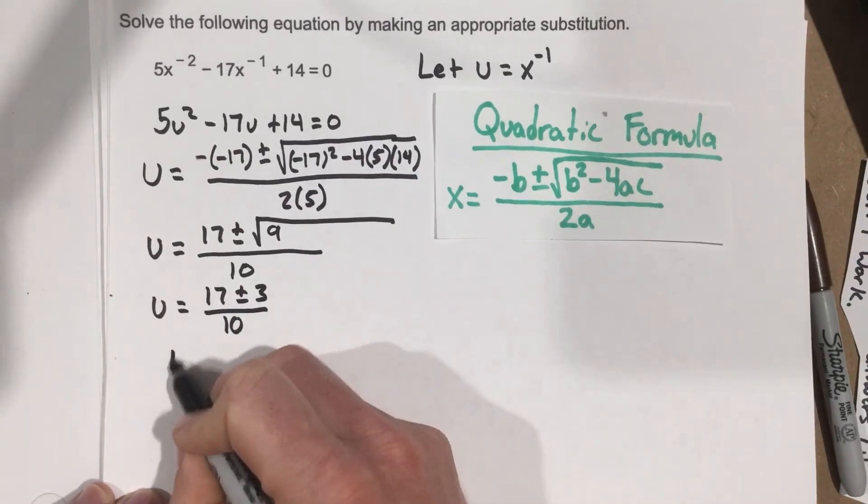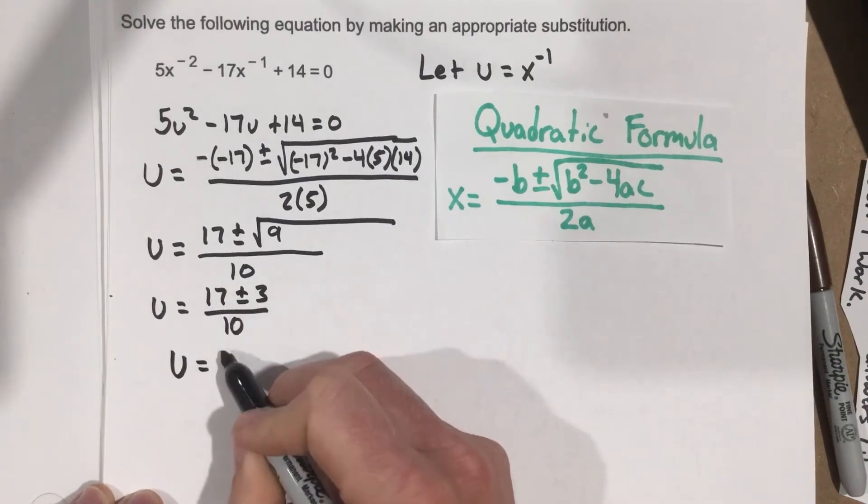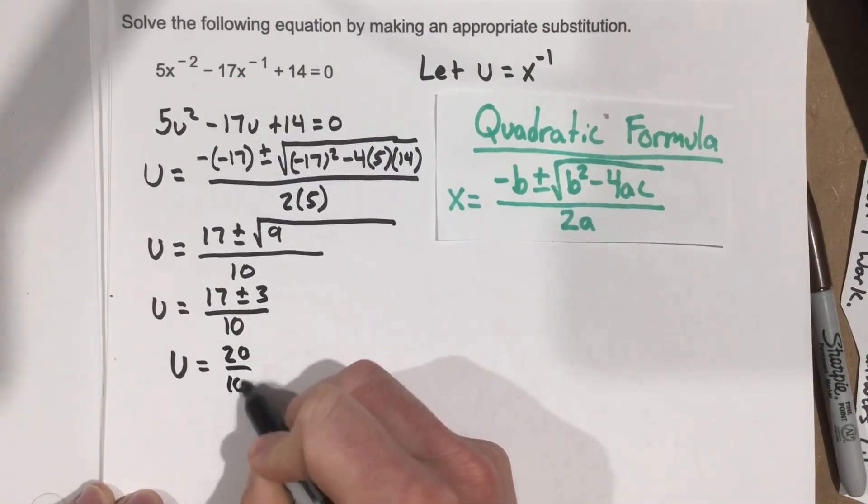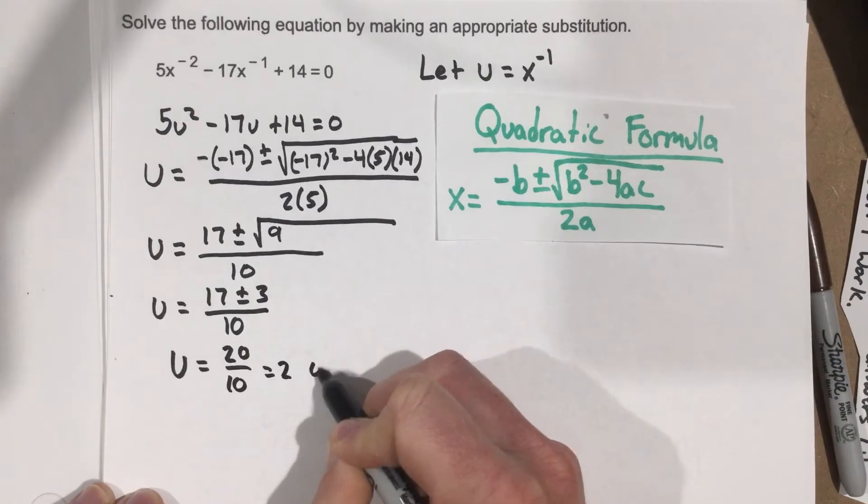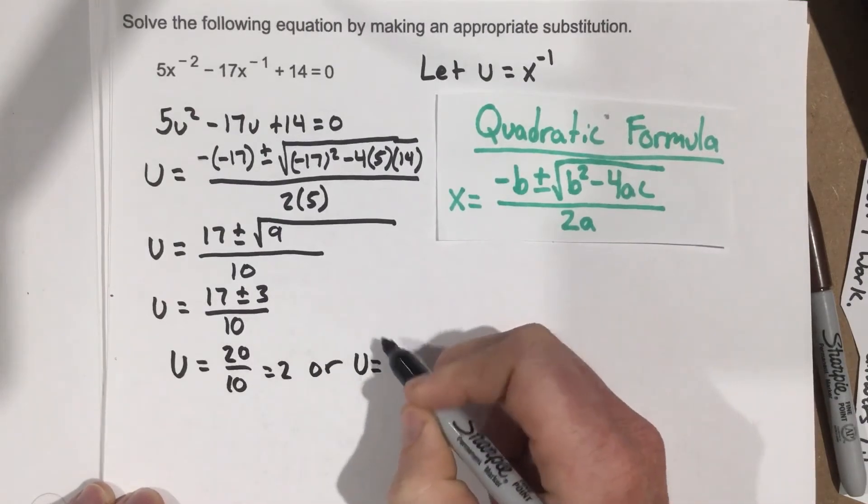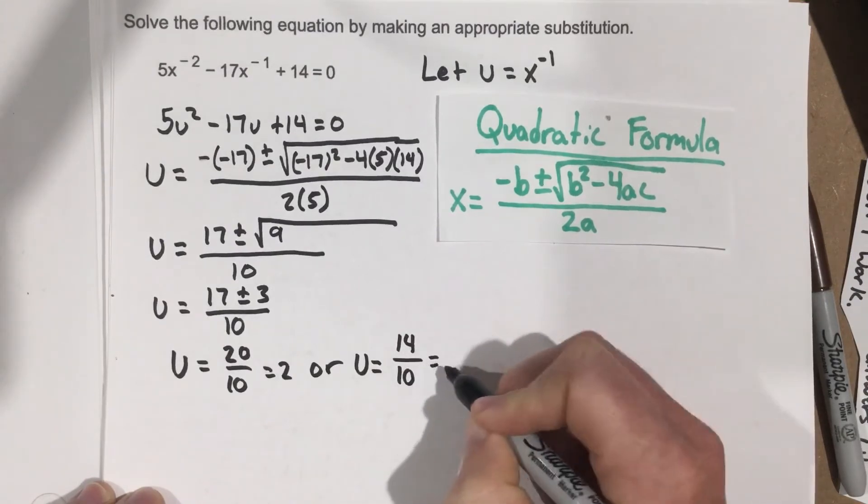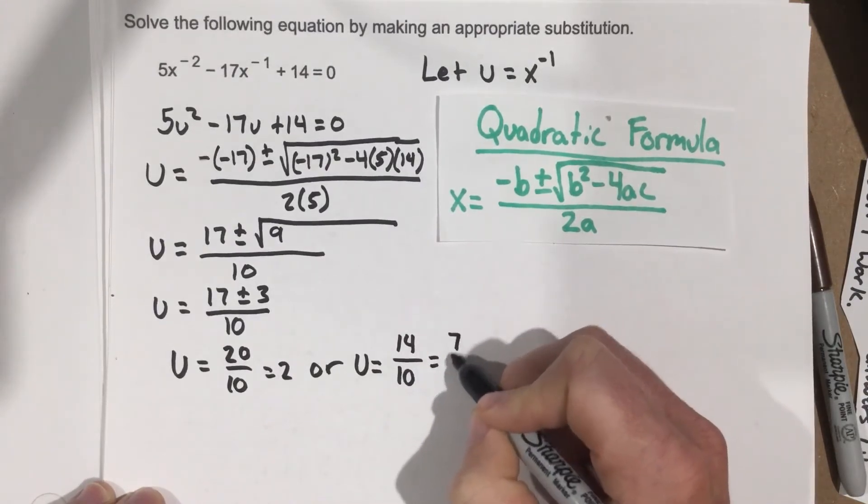which is 20 over 10, which is 2, or u equals 17 minus 3, which is 14, over 10, which is, divide them both by 2, you get 7 over 5.